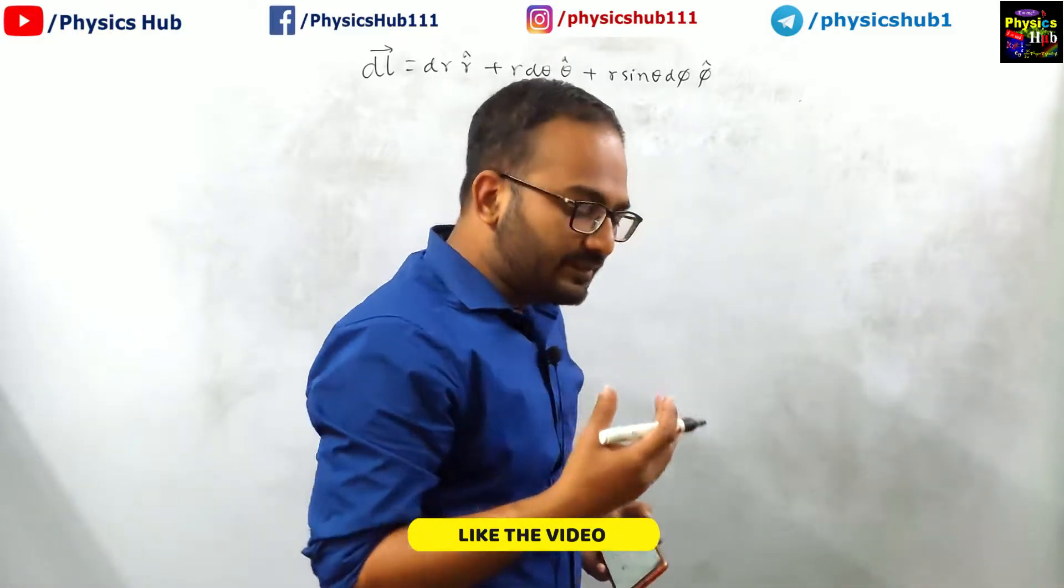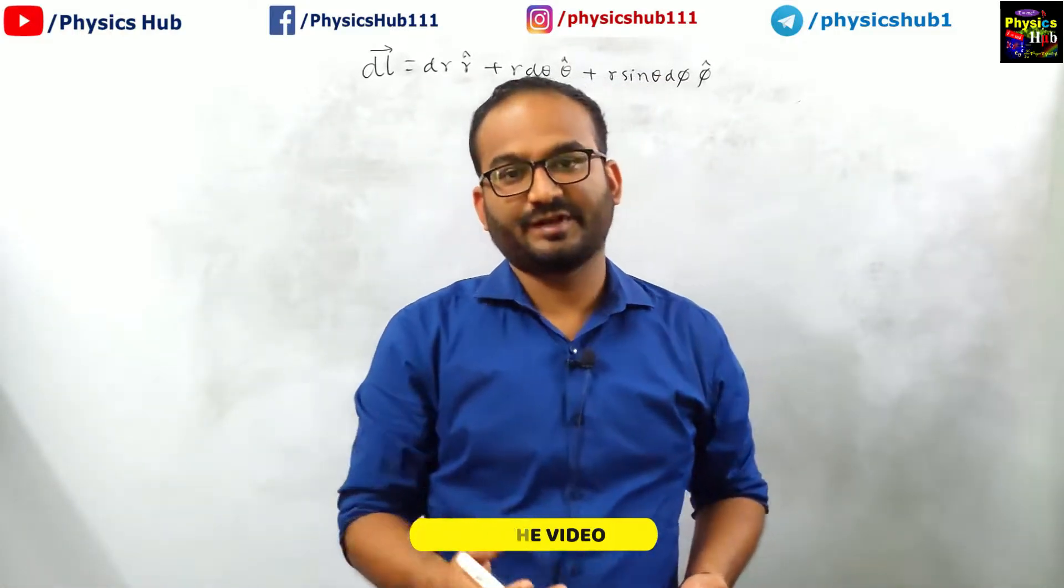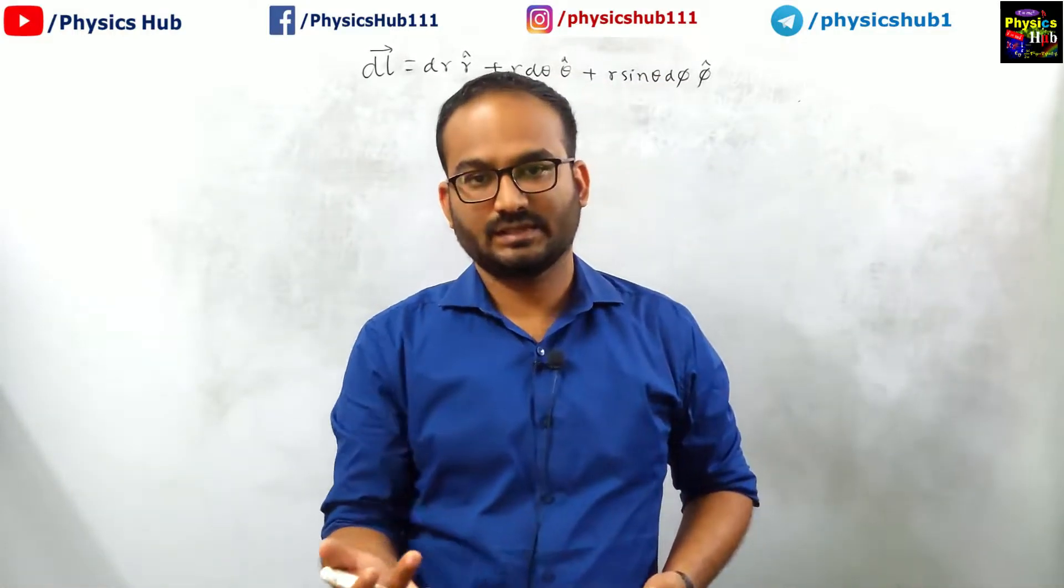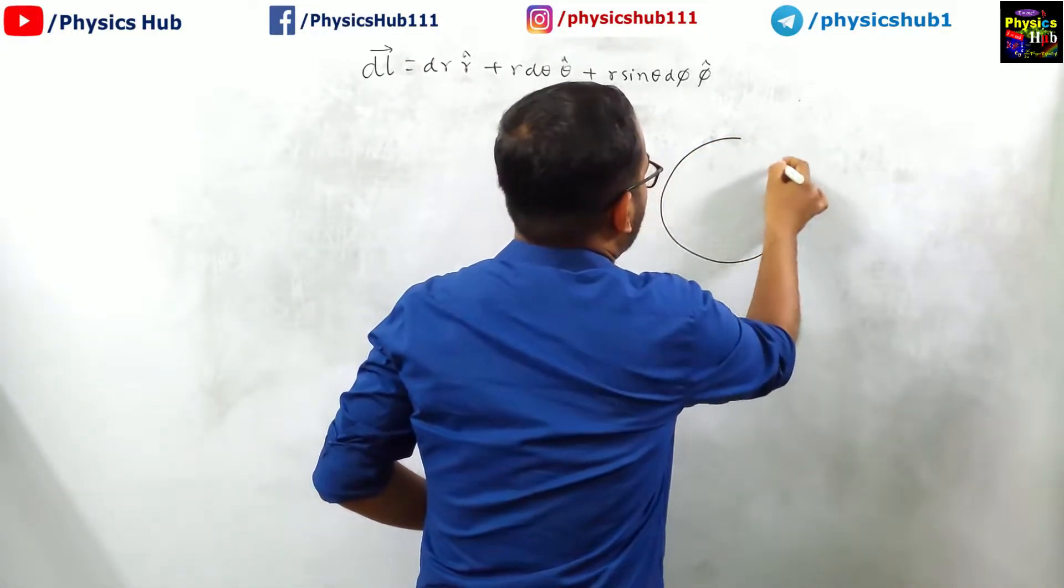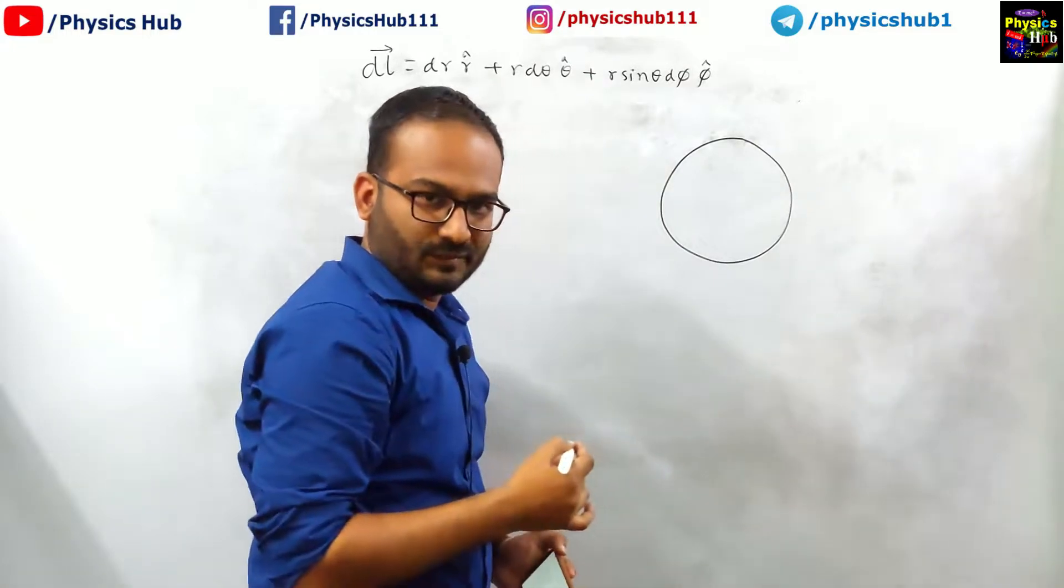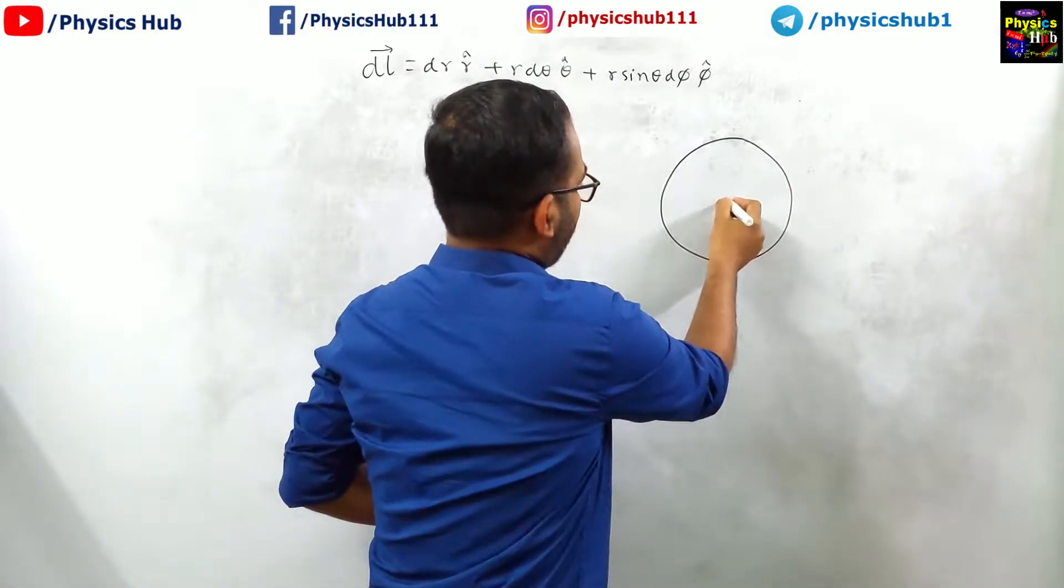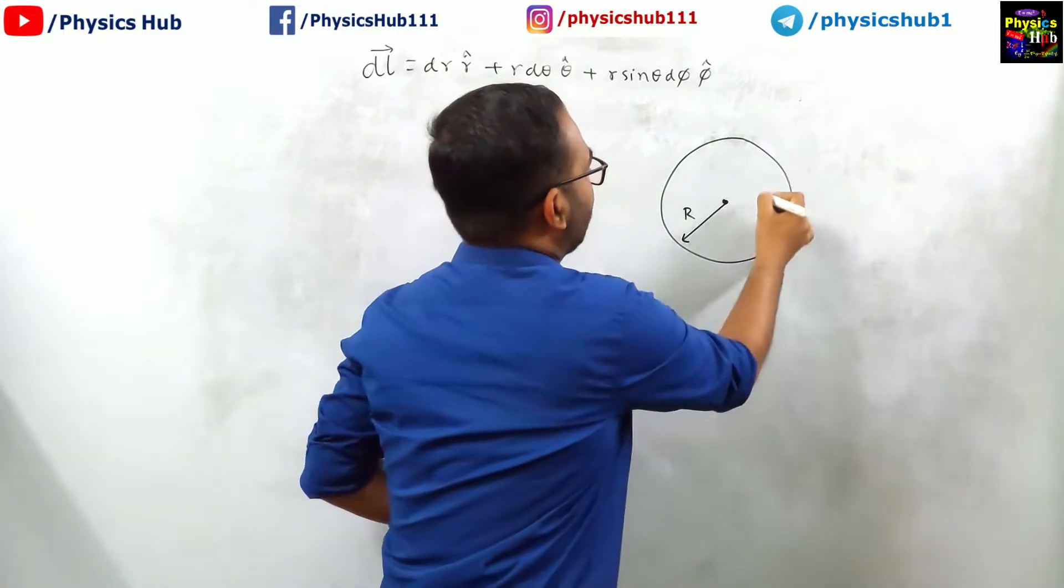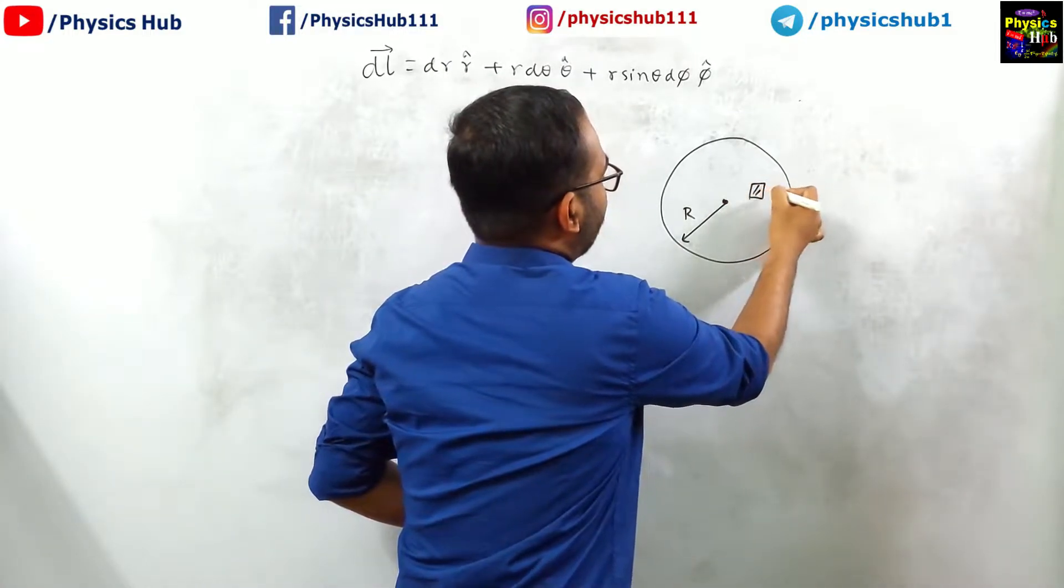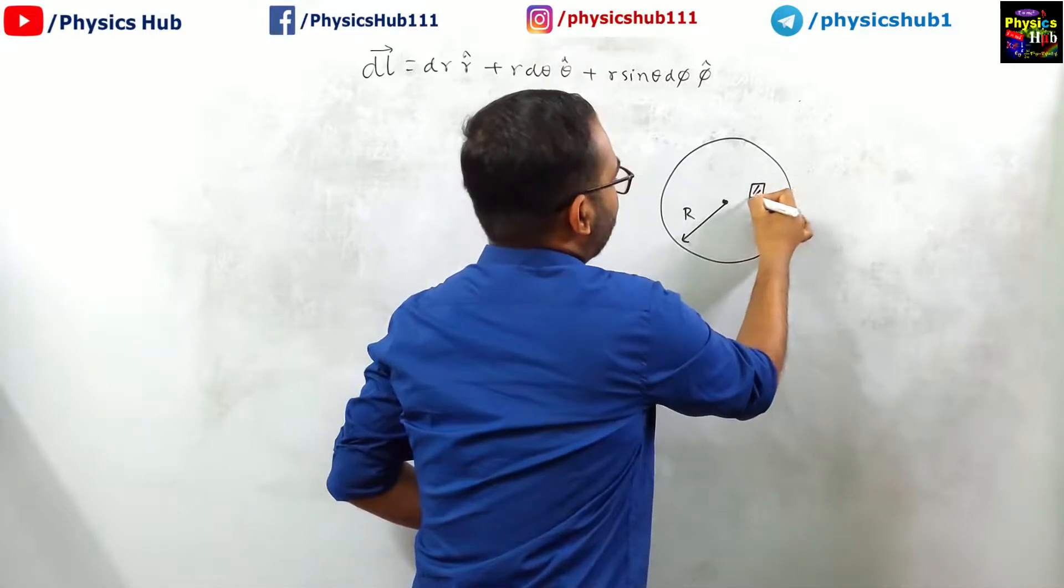Objects having spherical symmetry can be well explained by spherical polar coordinates. So let us take a surface, this is a sphere, a sphere with radius r. Now if you want to calculate surface element, let us say this surface element is dA.